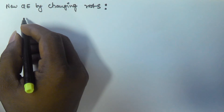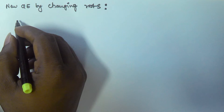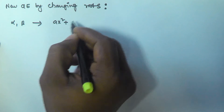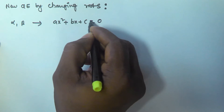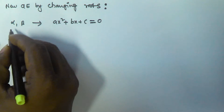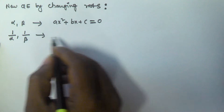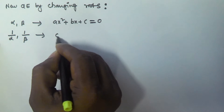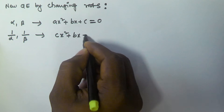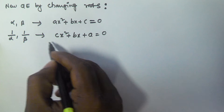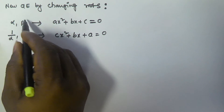In this video we will see how to find the new quadratic equation if the roots are the reciprocals of the given quadratic equation's roots. If alpha and beta are the roots of ax² + bx + c = 0, and the roots are reciprocal, that means the new roots are going to be 1/alpha and 1/beta. The corresponding quadratic equation is cx² + bx + a = 0 — we simply interchange the values of a and c.